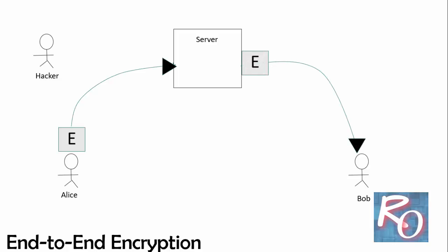With this, the hacker who taps the communication line between Alice and the server won't know what message is being sent. Also, if he hacks the server, he won't get to know the message because messages are not saved there. And the person working at the server also won't know the message since it is never decrypted and saved at the server.